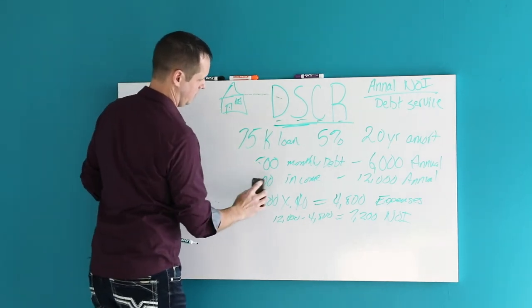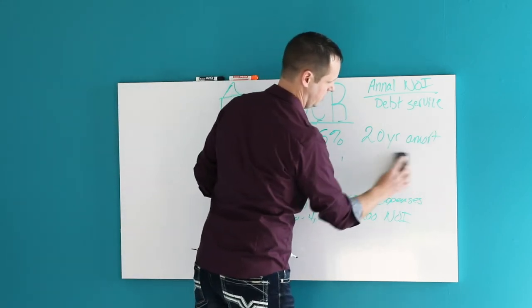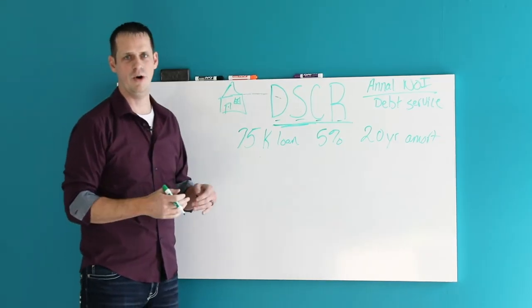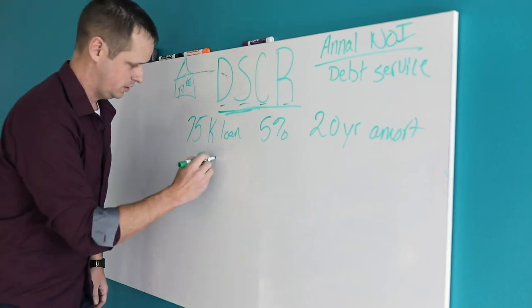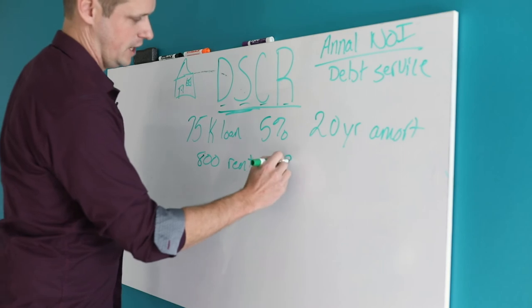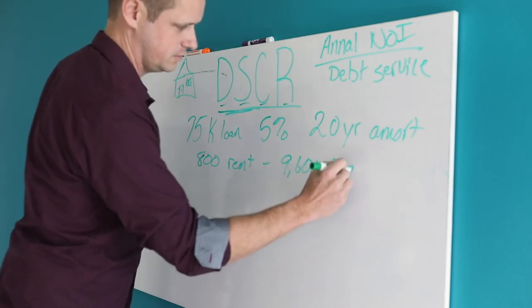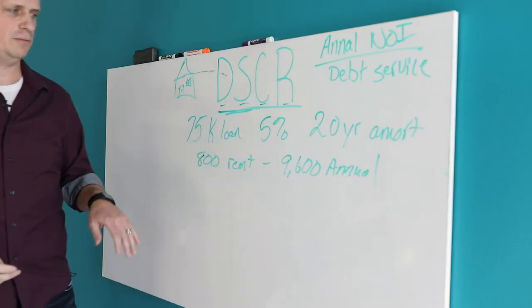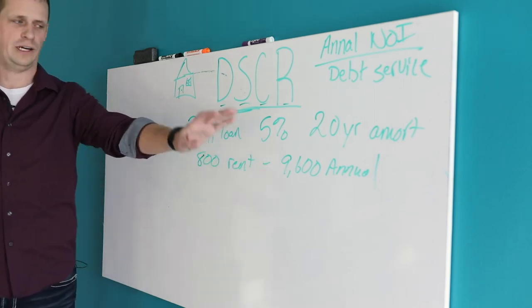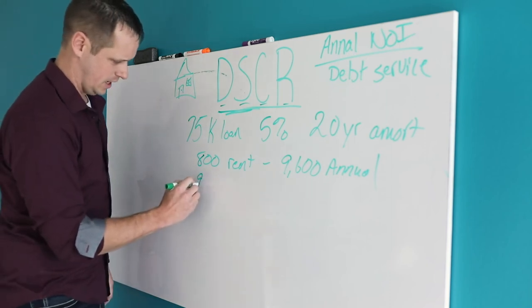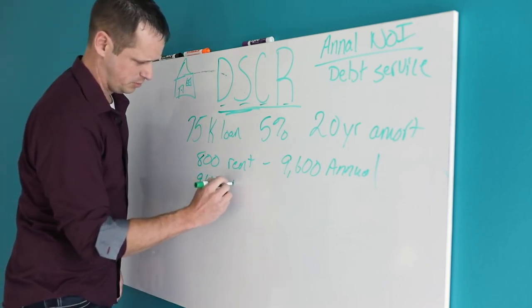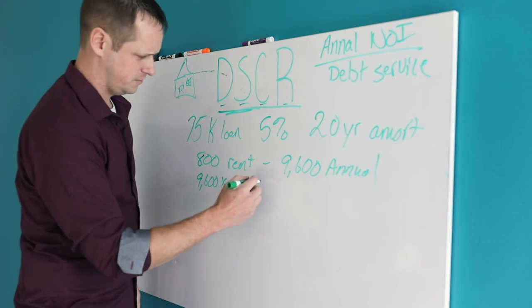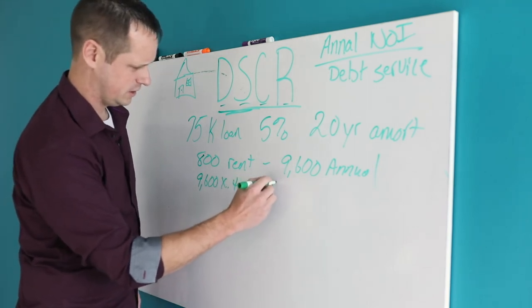Let me show you one that's maybe not so good of an example. We'll take the same house, same loan, everything else. But let's say the rent isn't quite $1,000. Let's say it's only $800 a month, which gives us $9,600 annually. So this is our income, annual income. Remember, we're not looking for our gross income. We're looking for our NOI. So we need to figure out what our expenses were out of this. $9,600 times 0.4 gives us $3,840.